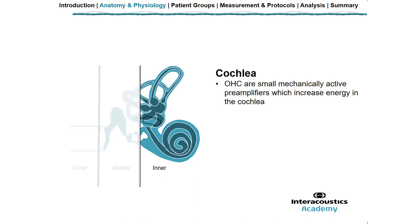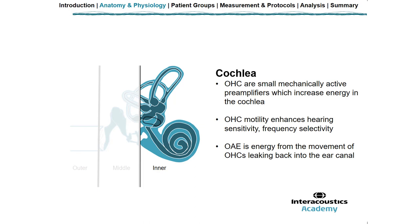Finally, the cochlea is where our OAEs are generated. The outer hair cells act as a preamplifier to increase energy in the cochlea, enhancing hearing sensitivity and frequency selectivity. It's this energy from the movement of the outer hair cells that leaks back to our outer ear that we can record as an OAE. If there are no outer hair cells or they've been extremely damaged, then we're not going to be able to record an OAE from that ear.